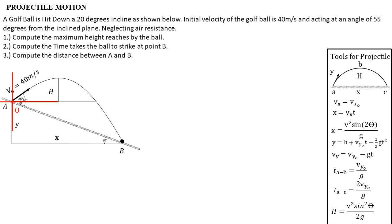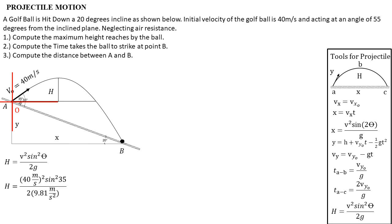Let's compute the maximum height reached by the ball — question number 1. This is a direct substitution using the last formula. Given V equals 40 meters per second and theta equals 35 degrees, substituting: the maximum height reached from the initial location is 26.829 meters.